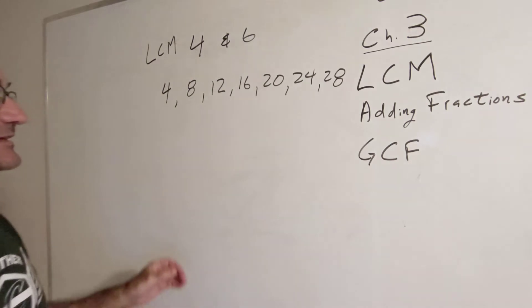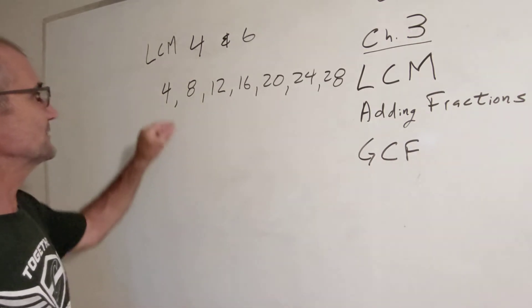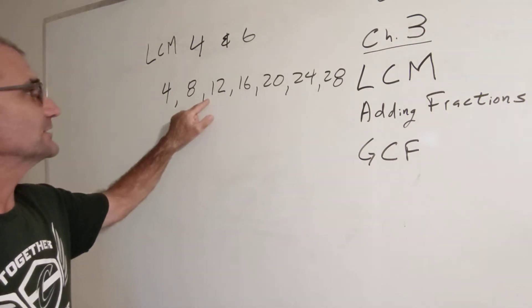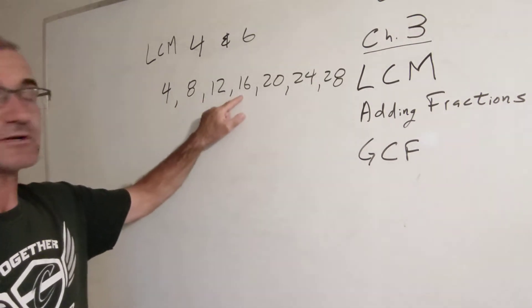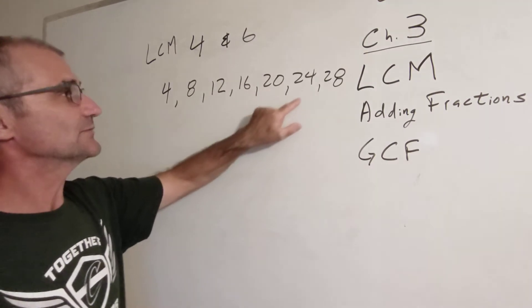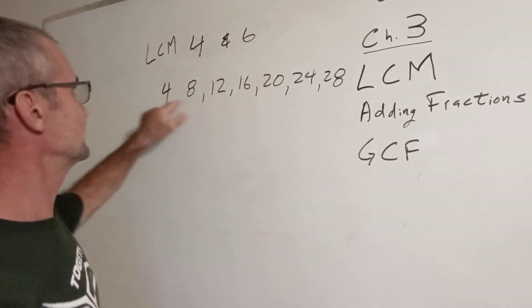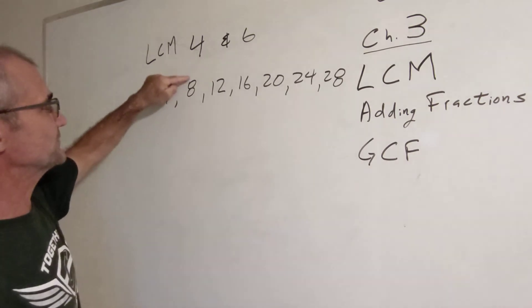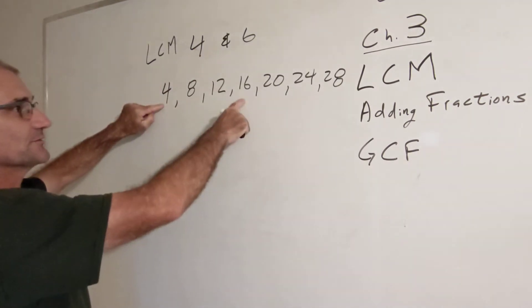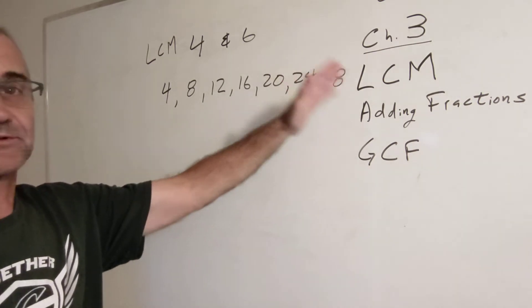I could think of it as an arithmetic sequence, adding things — 4 plus 4 is 8, plus 4 is 12, plus 4 is 16, plus 4 is 20. Or geometrically, which is multiplying: 4 times 2, 4 times 3, 4 times 4. So these are the multiples of 4, and they keep going.